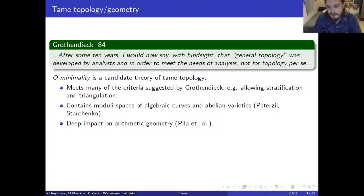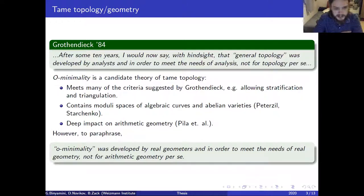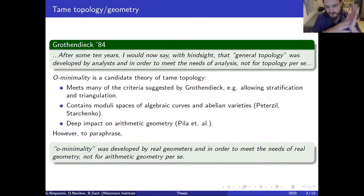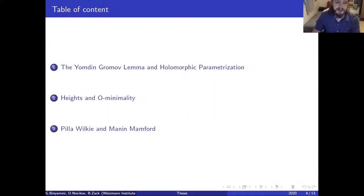My research team is interested in arithmetic geometry much more than tame geometry. To paraphrase: o-minimality was developed by real geometers in order to meet the needs of real geometry, not for arithmetic geometry per se. My advisors invented an instance of tame geometry for the holomorphic category, and what I did is refine their construction so that it better suits arithmetic geometry.